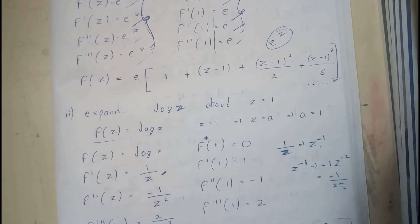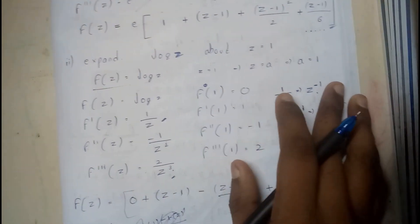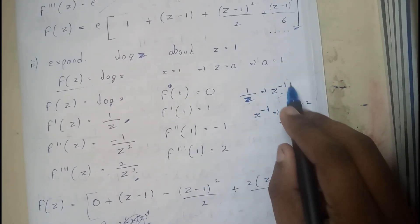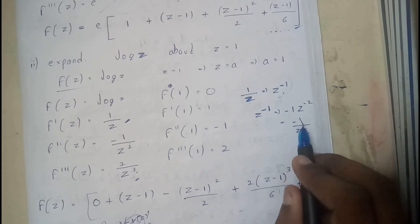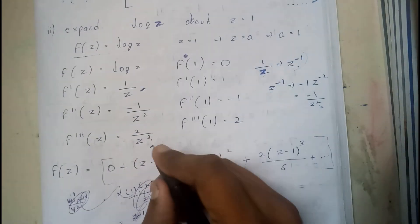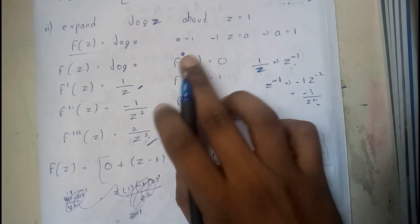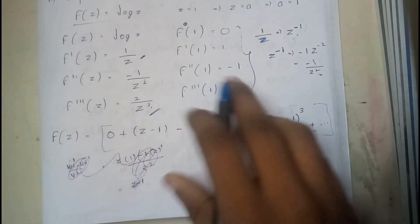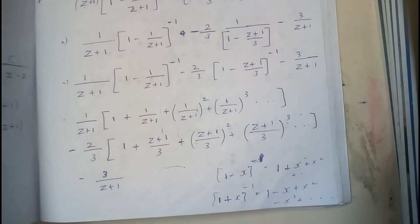Similarly, for a question like log z — the differentiation of log z is 1/z, and differentiation of 1/z written as z⁻¹ gives −1·z⁻² = −1/z². You will further solve it; the given value is z = 1, so substitute 1 to get the values and plug them into the formula. I hope everyone is now clear with Taylor's series expansion.